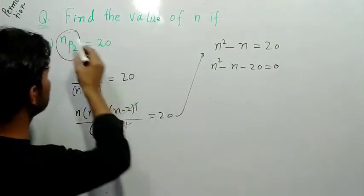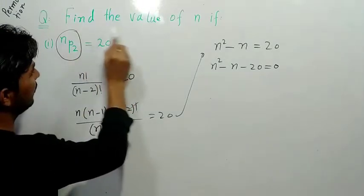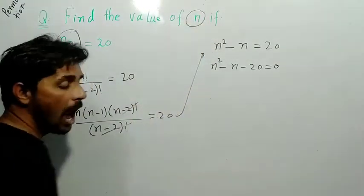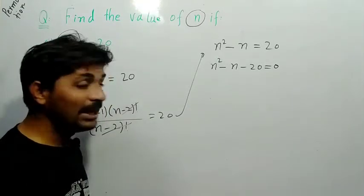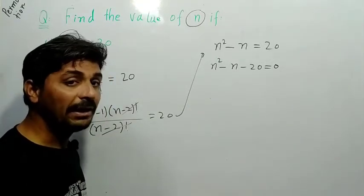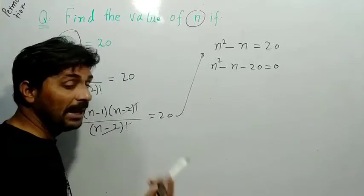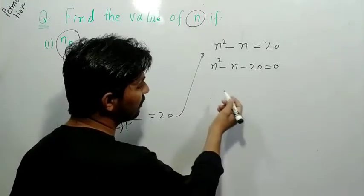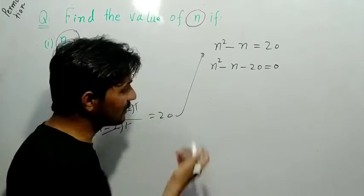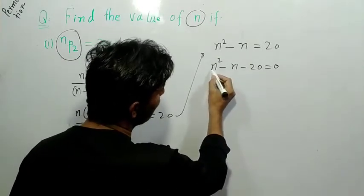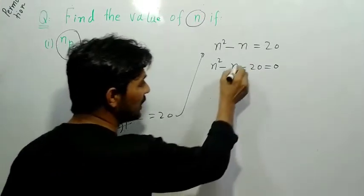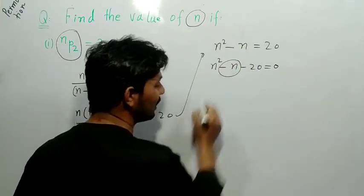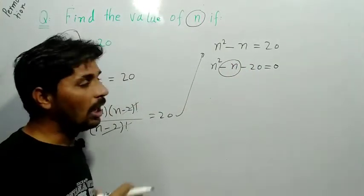Now we have to find the value of n. Yes friend, we need n's value. So here we will take out the factors. We will use the factoring method - we will find n's required value by taking out factors. So friend, first we will see the breaking method to take out the factors for n.